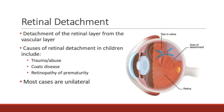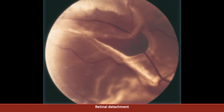Retinal detachment is a serious condition where the retinal layer in the back of the eye detaches from the vascular layer. There are many different causes of retinal detachments. In the pediatric population, the common causes include trauma, abuse, Coats disease, and retinopathy of prematurity. This is a picture of a retinal detachment caused by a tear in the retina. With retinal detachment, the thin layer of the retina can obstruct the light to the vascular layer, giving it a white appearance.